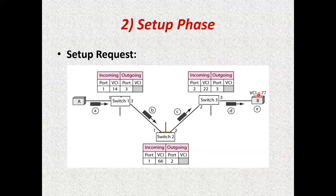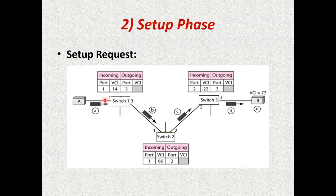Suppose A and B are two devices that want to communicate with each other. In between A and B there are three intermediate nodes: switch one, switch two, and switch three. Every switch must maintain a table with four columns: incoming port number, incoming VCI, outgoing port number, and outgoing VCI.